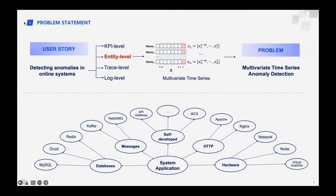First, we go into the research problem. The user story we face is to detect anomalies in online systems. Usually, online anomalies can be divided into KPI level, entity level, trace level, and log level. In this paper, we focus on detecting anomalies at the entity level, such as cloud servers, containers, and microservice instances.